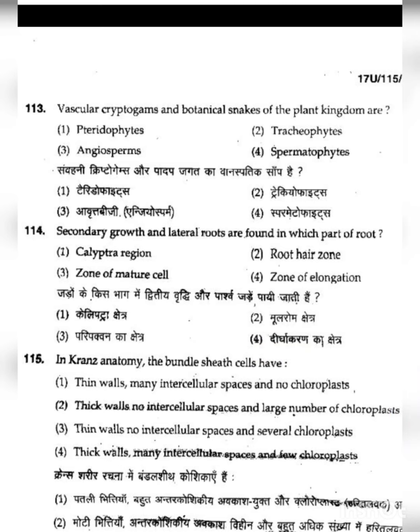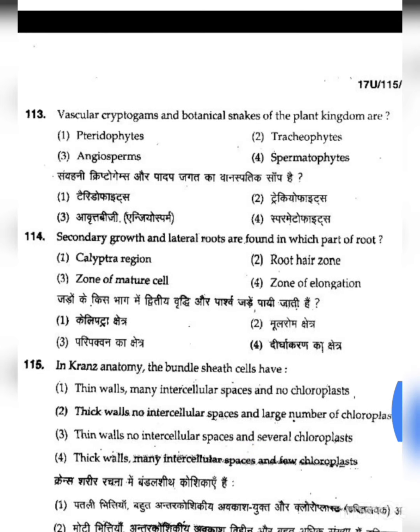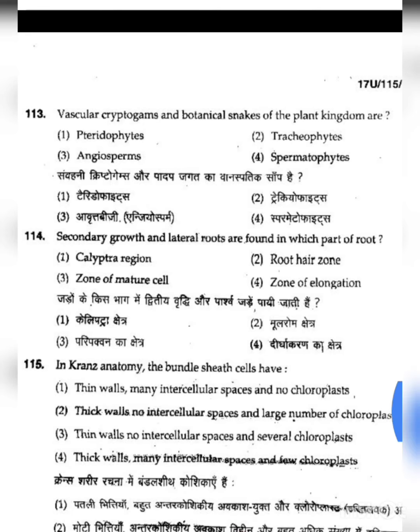Question 113: Vascular cryptogams and botanical snakes of the plant kingdom are — these are Pteridophytes. In the plant kingdom, algae came first, then bryophytes, and then pteridophytes, in which we first see a vascular system. Therefore, they are called vascular cryptogams. The first option, Pteridophytes, is the correct answer for 113.